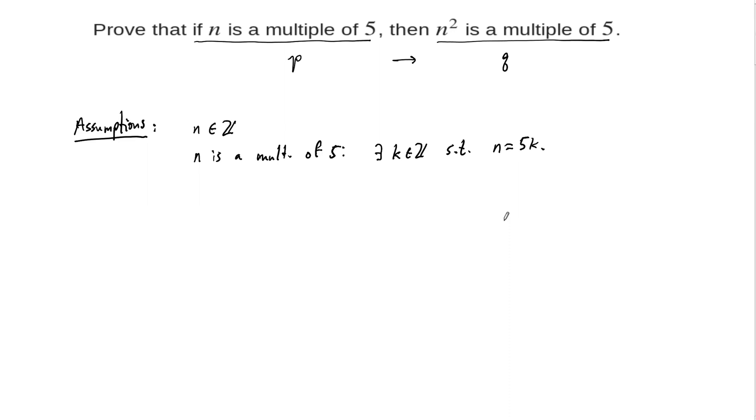In this case, we call that something K. We don't know what it is, and it's not really that important exactly what K is in this statement. What we want to prove, then, is that n squared is a multiple of 5.